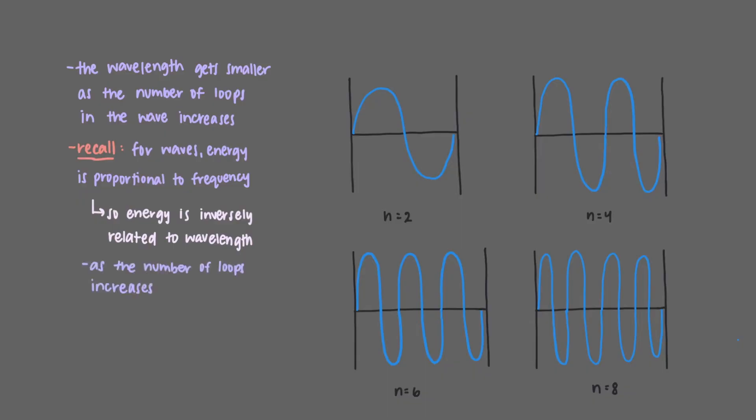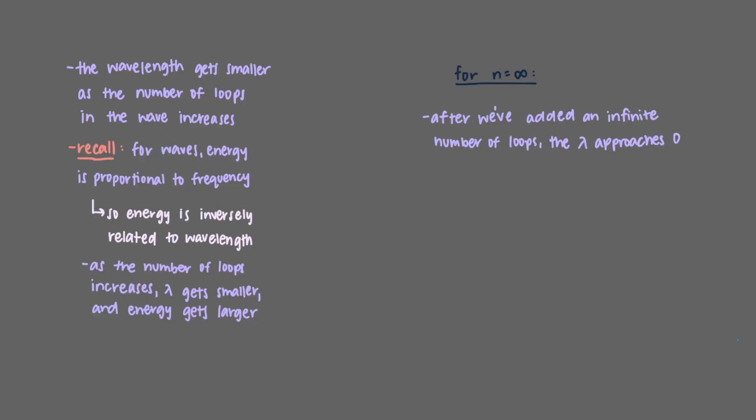That means that as the number of loops increases, the wavelength gets smaller and the energy of the wave gets larger. Eventually, after we've added an infinite number of loops, the wavelength approaches zero. This wave will stop behaving as a bound electron wave and will become detached from the atom. It flies away from the atom. This process of the wave becoming unbound from the electron is called photoionization.